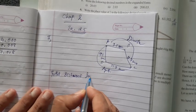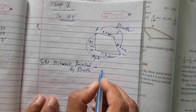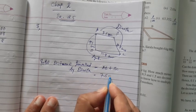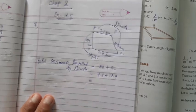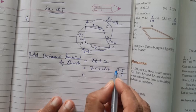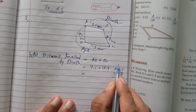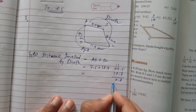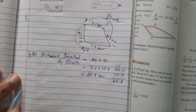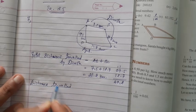Total distance traveled by Dennis equals AB plus BC. AB equals 7.5 and BC equals 12.7, so 7.5 plus 12.7. Decimal under decimal: 5 plus 7 is 12, write 2 carry 1; 7 plus 2 plus 1 is 10, write 0 carry 1; 1. That gives 20.2 kilometers.